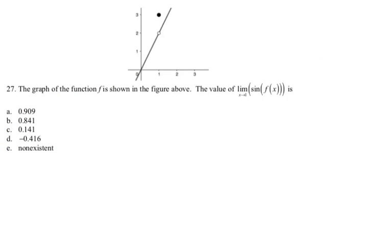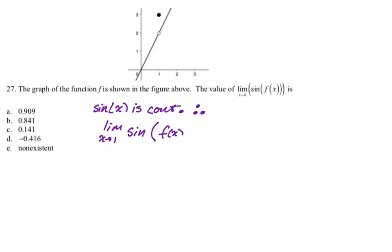This is the only calculator question on the entire thing. The graph of the function f is shown in the figure above. The value of the limit as x approaches 1 of sine of f of x is — this comes up a lot, and it's a property that I think is not highlighted often enough. If a function is continuous — sine of x is continuous — you can move the limit inside the function. So since sine of x is continuous, we can say the limit as x approaches 1 of sine of f of x equals the sine of the limit as x approaches 1 of f of x. That works because sine is a continuous function.